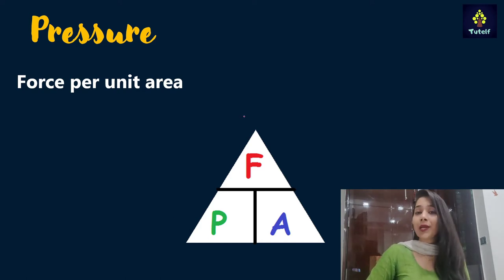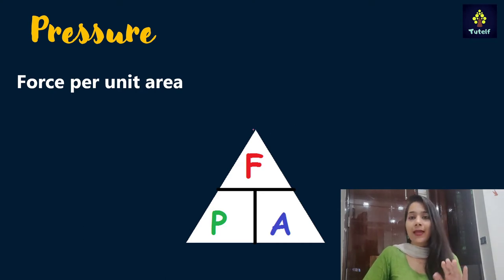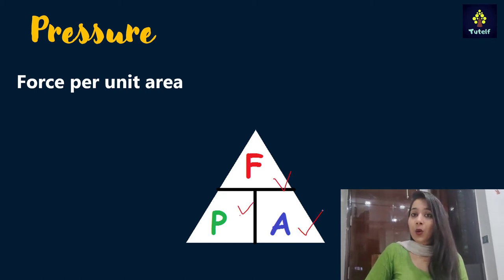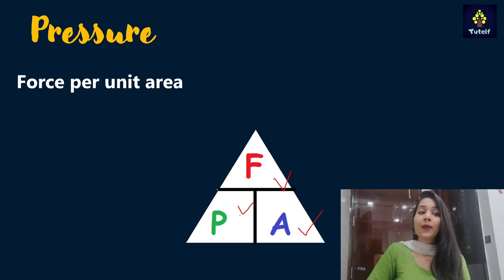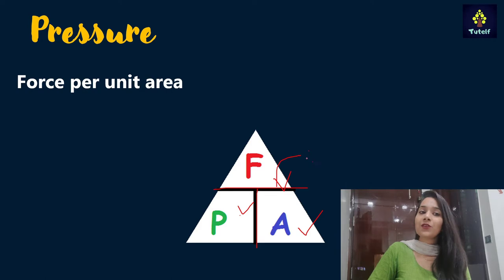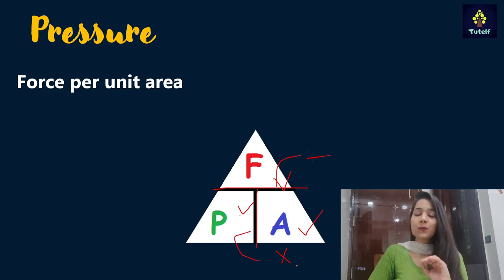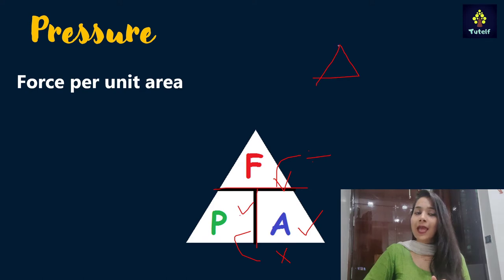There is a trick for remembering the formula for pressure. What we do is make a triangle, and inside the triangle we write P, F, and A. After writing all the initials, we separate them using lines — a horizontal line and a vertical line. The horizontal line represents division and the vertical line represents multiplication.